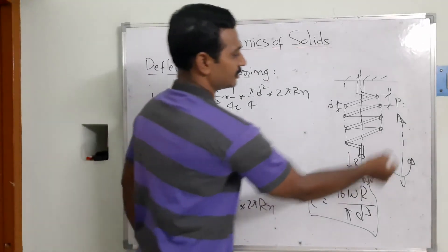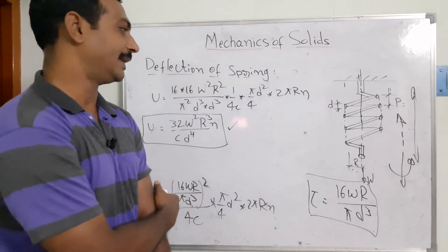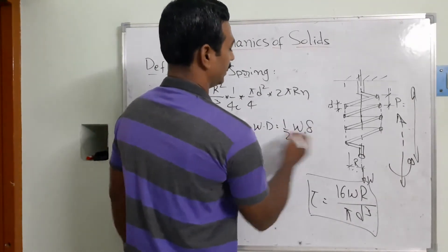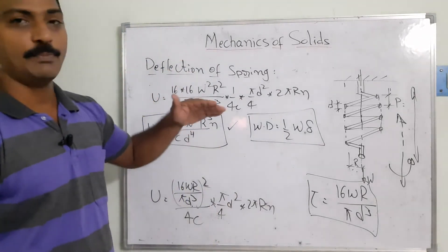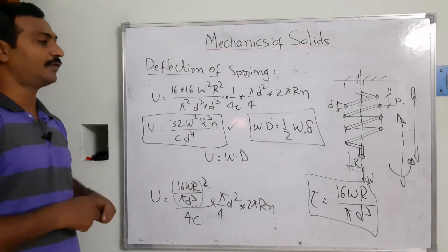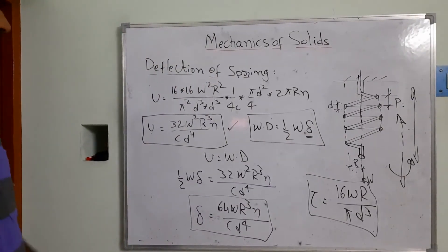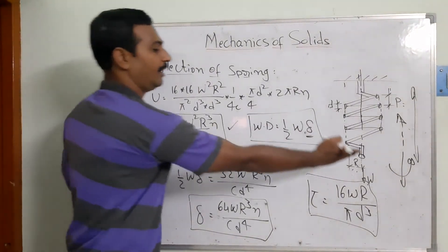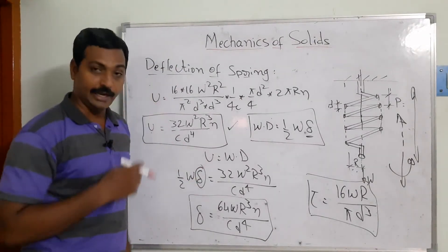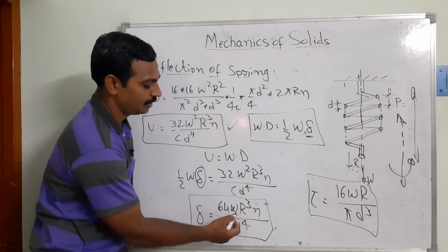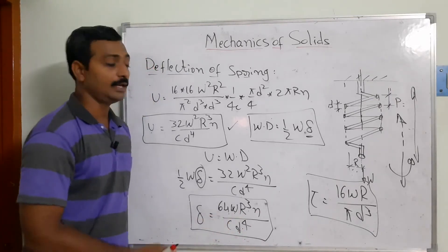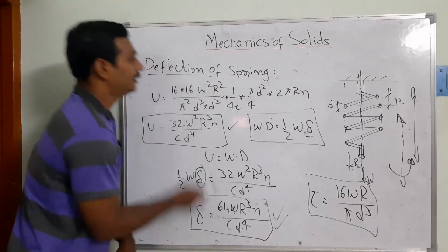The spring vibrates up and down due to the applied load. The work done on the system equals the average load times the deflection. The deflection δ moves from the mean position in the downward direction. Setting strain energy equal to work done — (1/2) × W × δ = U — and solving, we get the deflection of the spring: δ = 64WR³n / (C × d⁴), where d is the wire diameter and R is the mean radius.